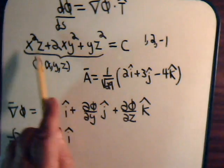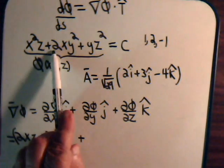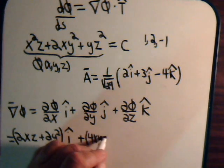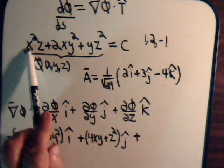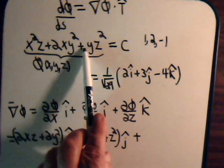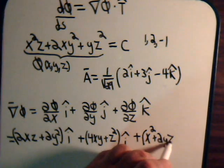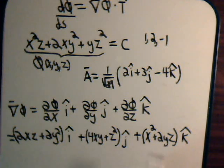Again, that's just taking the partial derivative of this with respect to x: 2xz plus 2y squared. Now take the partial with respect to y, and that will give us 4xy plus z squared times the unit vector j. Now we take the partial of psi with respect to z, and that will be x squared plus 2yz times the unit vector k. So this is the gradient of our scalar function psi.